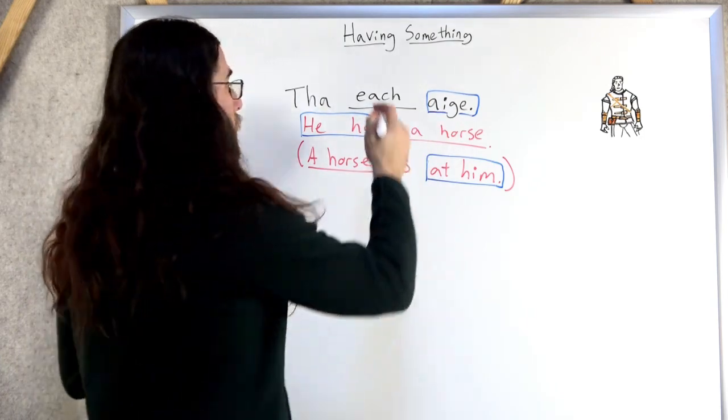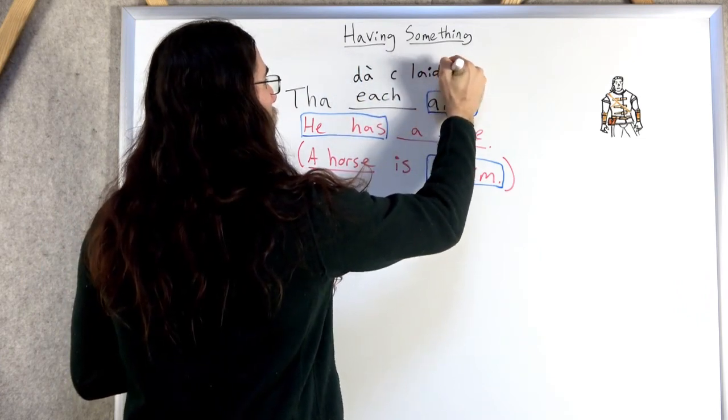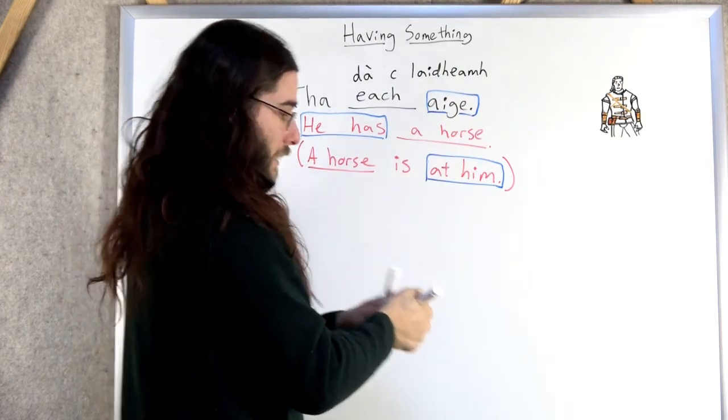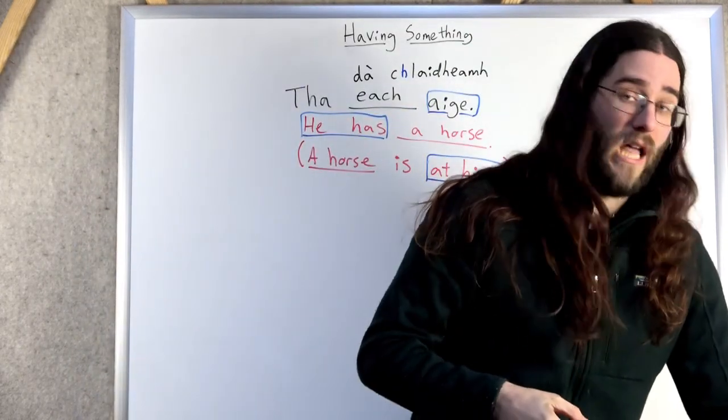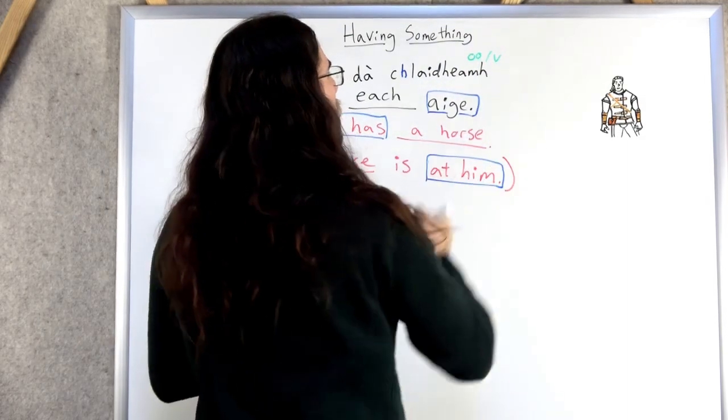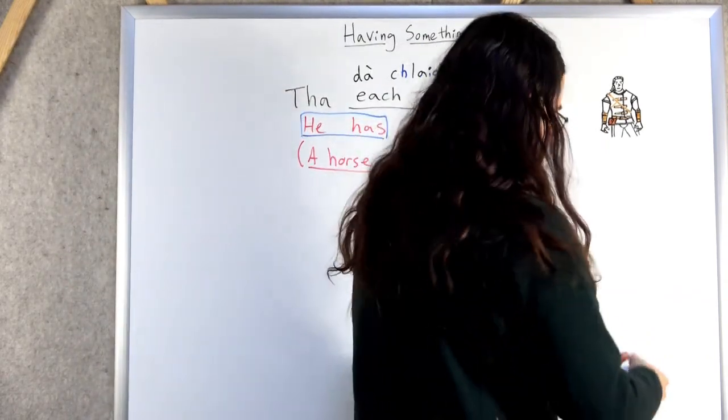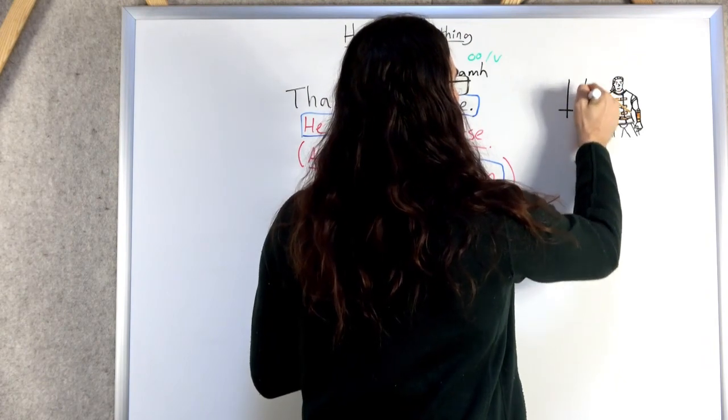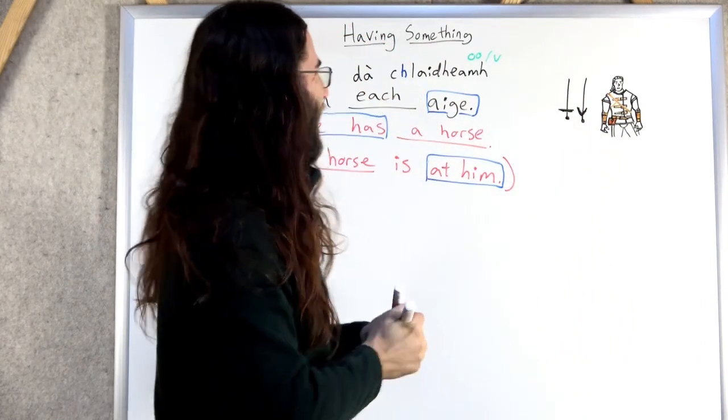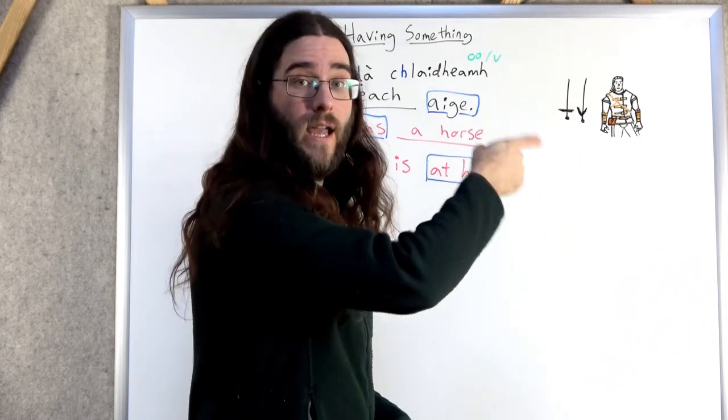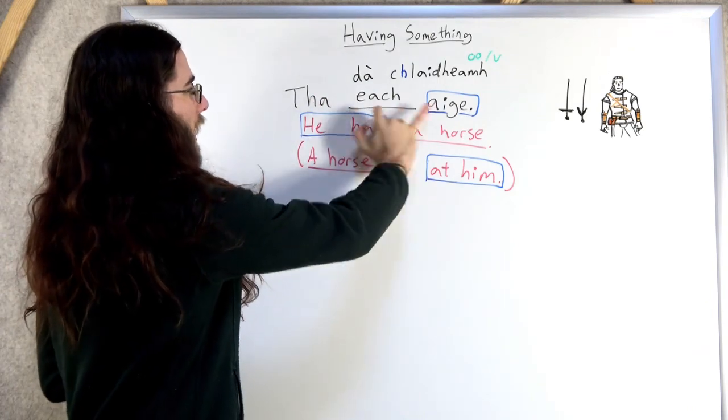So he has two swords. Remember that? Ha da khlaiw. Or khlaiw. Depending on your dialect. Da khlaiw. Da khlaiw. Or v. Ha da khlaiw ike. In kersh. A hen. Ha ga. Ach. Ah, gliva. Da khlaiw. Ha da khlaiw. Ike. Gliva. So, whatever you have goes in between the ha and ike.